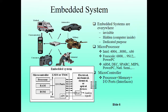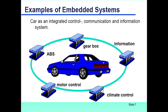One example of an embedded system is a car as an integrated control, communication, and information system. Modern cars have ABS, gearboxes, information processing, climate control, and motor control — all controlled by the embedded system inside the vehicle. Modern cars are a great example of an embedded system.